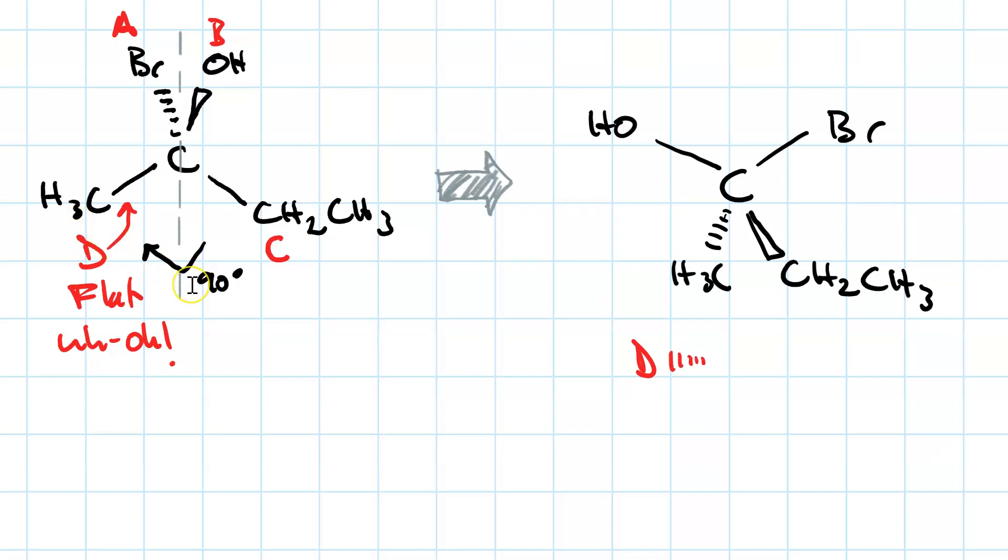Now if we had rotated 90 degrees to the right, then the methyl group would be on a wedge and the ethyl group would be on a dash, and the bromine would be going up and to the left and the hydroxyl would be going up and to the right, and either way is fine. This is just to say we don't need to do any more rotation.